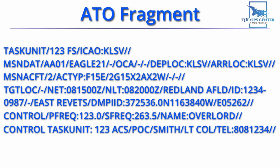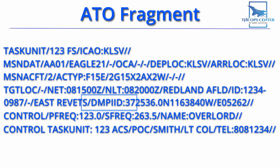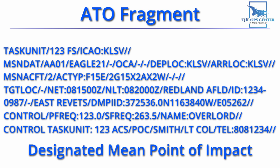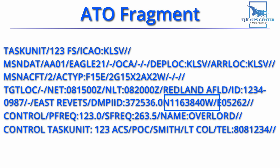We see some other information about the target that's wrapped to the next line. Here it says East Revets, which is talking about revetments like these that are used to protect parked aircraft or other important assets. And after all that, we see DMPI ID. DMPI stands for Designated Mean Point of Impact — it means a geographic spot that's in the middle of your targets, which in this case is a set of revetments. This gets the aircrew to look at one location and then gives them the freedom to target things as they see fit. The DMPI here has a northing coordinate denoted by N and a westing coordinate denoted by W, and beside that is an elevation above sea level.